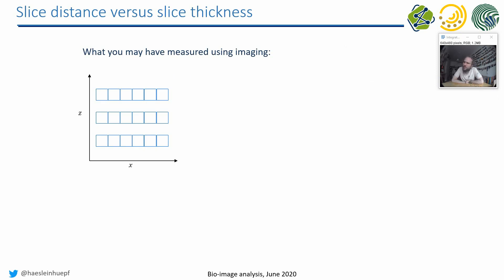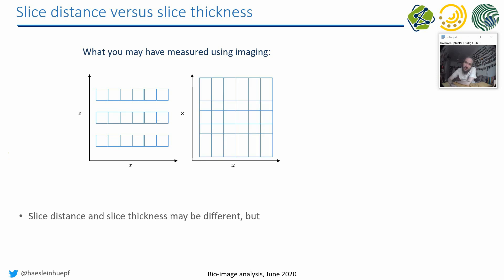Depending on what imaging technique you use — in medical imaging more so than microscopy, but it happens in both — I would like to introduce you to the difference between slice distance and slice thickness. Assuming we are in X and Z dimensions and we acquire images with 5 pixels in X and 3 slices with a certain distance between them, that's what slice distance means. We can also configure the slice thickness — for example, making it thicker than the distance, giving us overlapping pixels in Z.